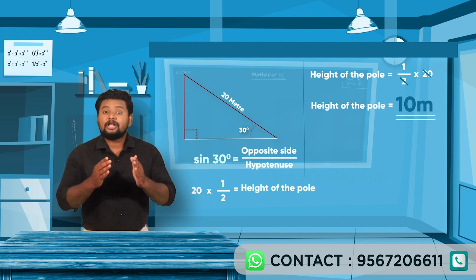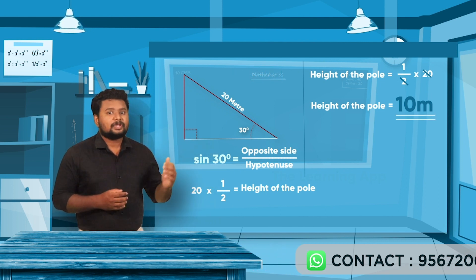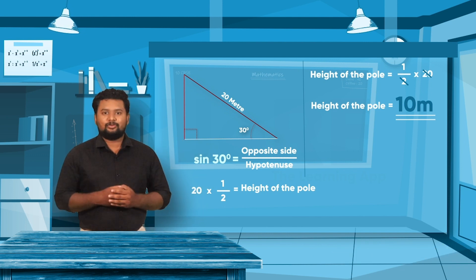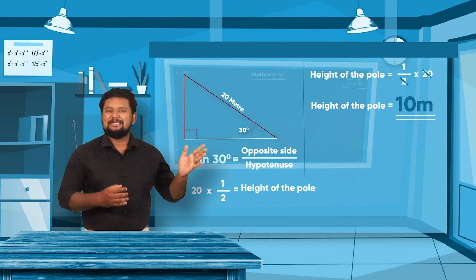Using Trigonometry, we easily calculated the height of the pole, which is 10 meters.